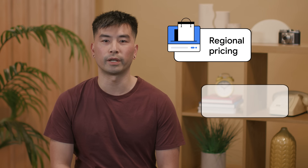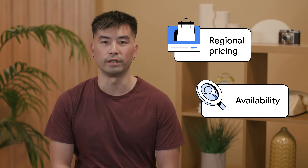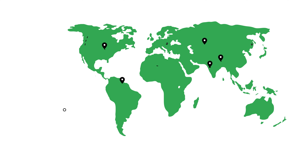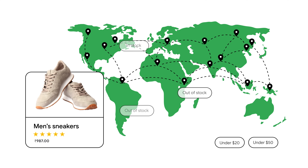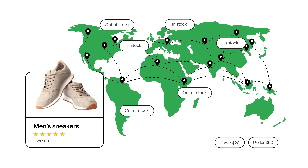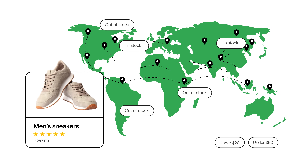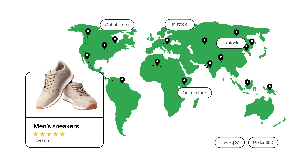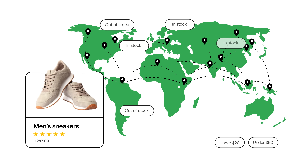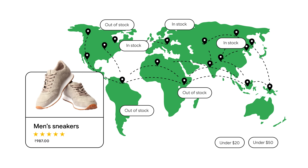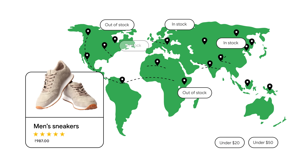Let's get into a few examples. You can use supplemental data sources to manage regional pricing and availability. If you sell in multiple countries, you can maintain consistent product information in your primary data source, and use supplemental data sources to adjust pricing and availability based on each region.